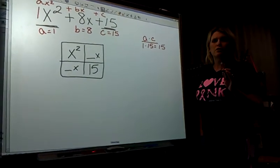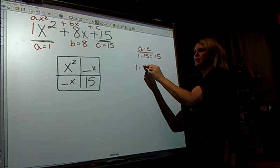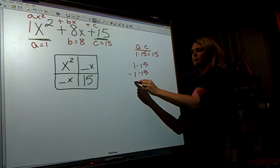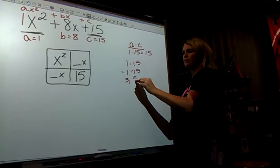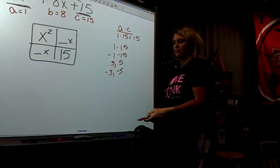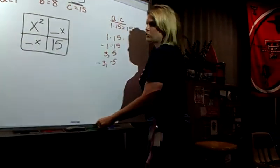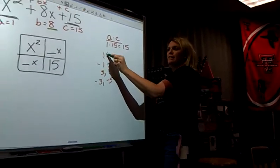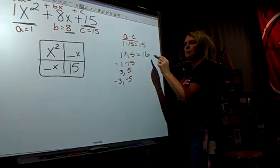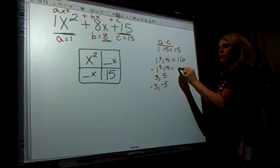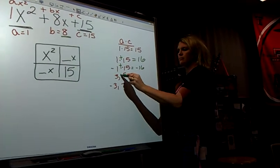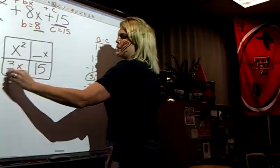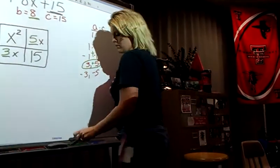You need the factors of 15. I have 1 times 15, negative 1 times negative 15, 3 and 5, negative 3 and 5, negative 3 and negative 5. I need the factors that add together to give me the middle term. If I add these together it gives me 16, add these together negative 16, 3 and 5, there's the 8. So I'm going to put a 3 and a 5 here.